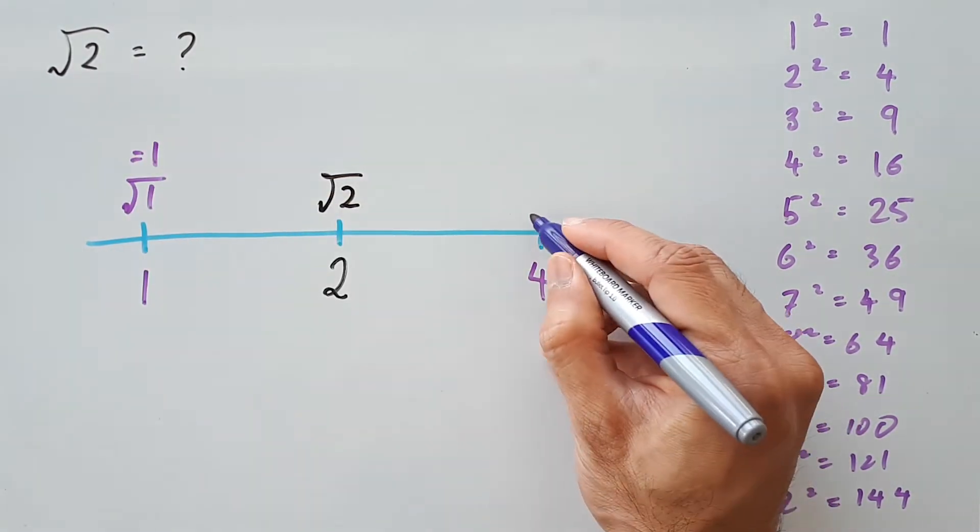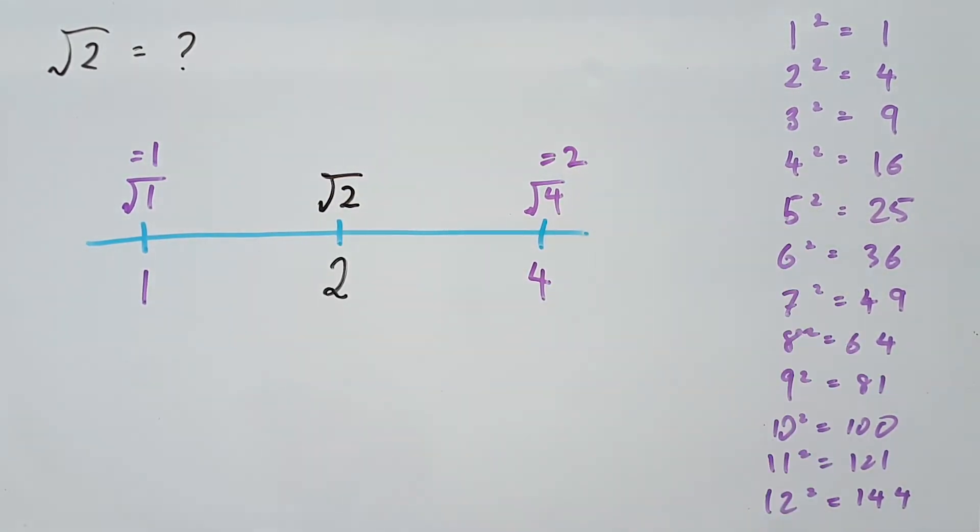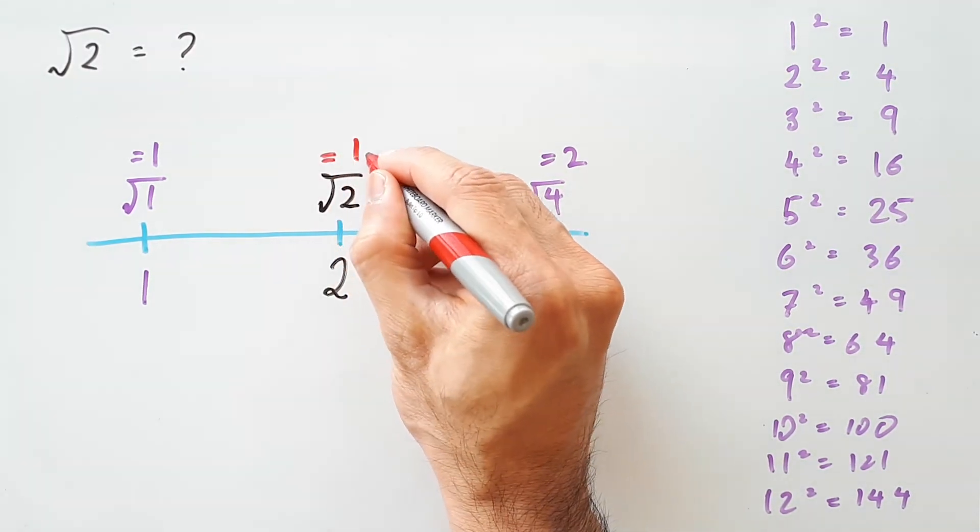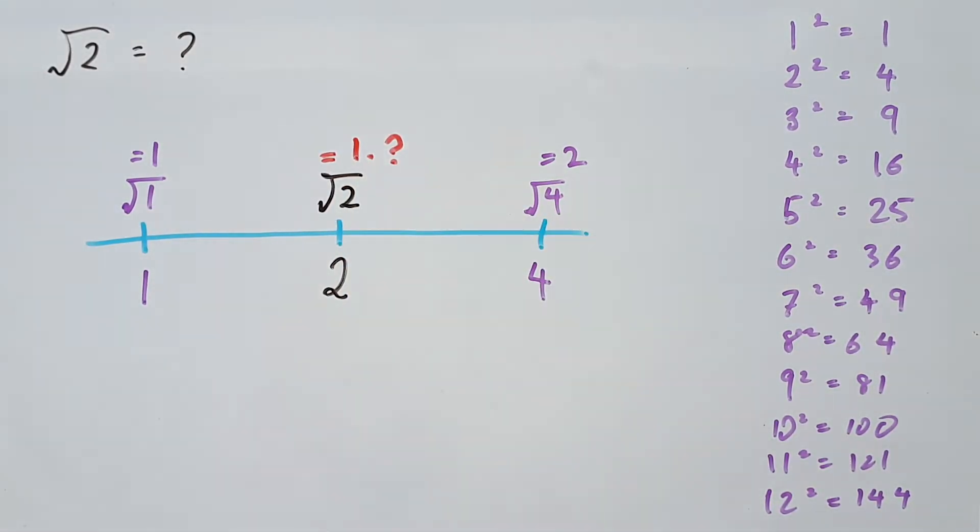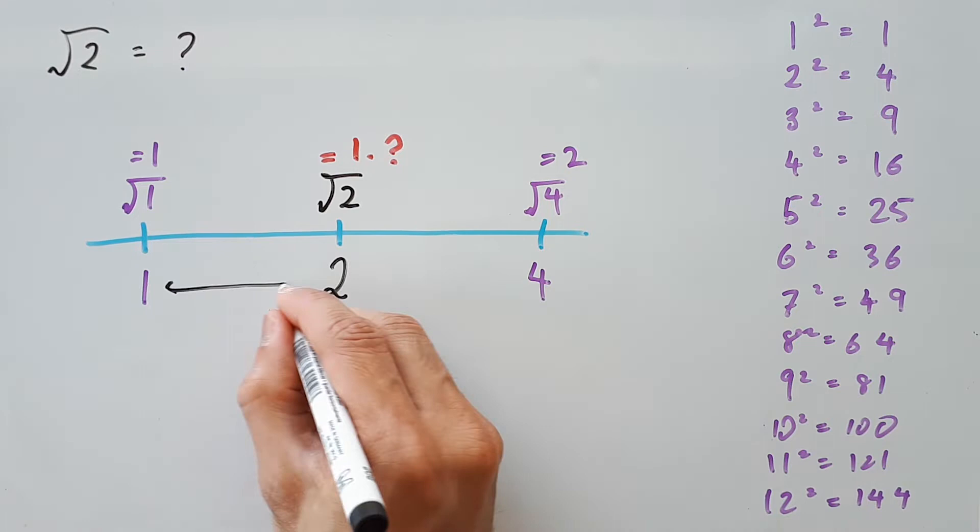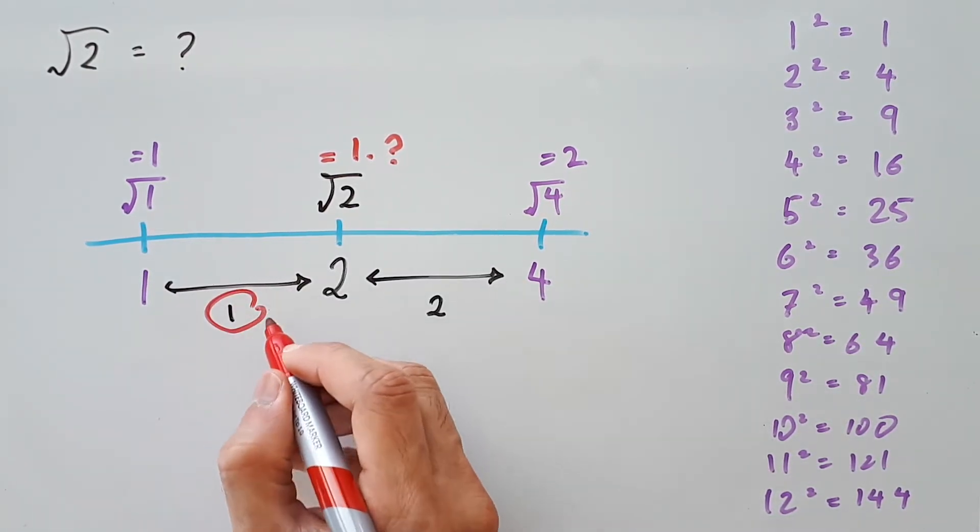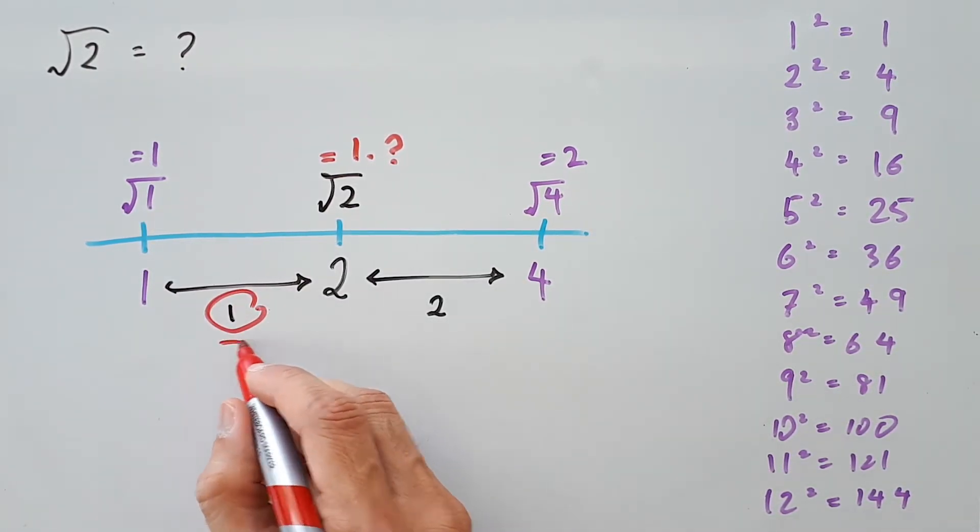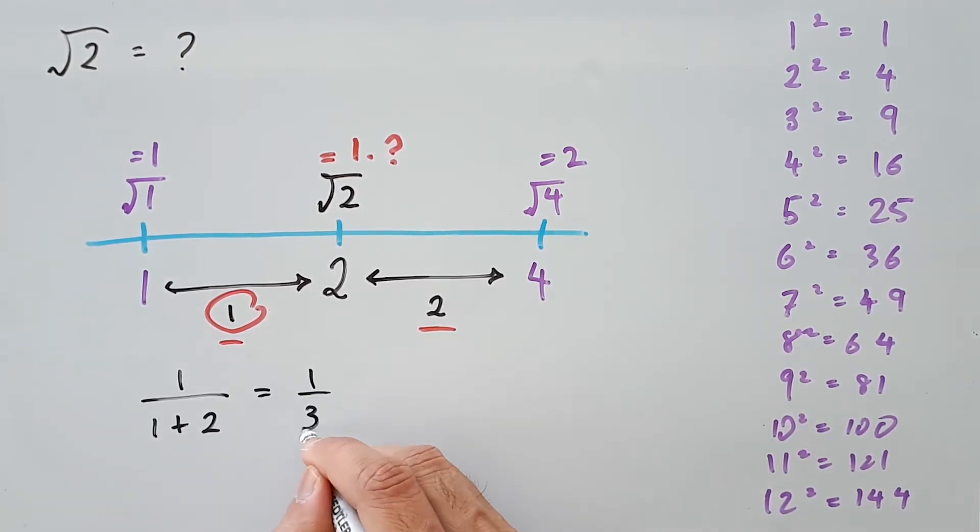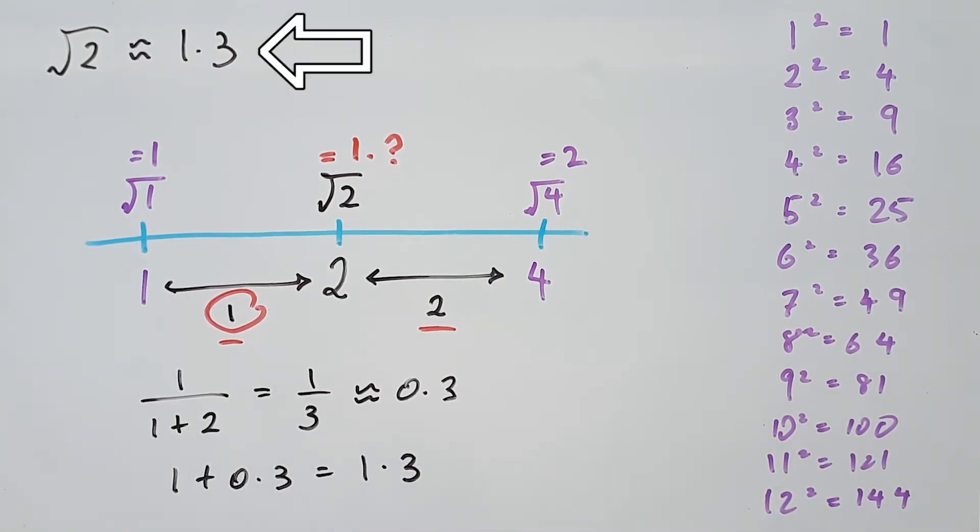Since square root 1 equals 1 and square root 4 equals 2, this must mean that square root 2 is between the values 1 and 2. So square root 2 will equal 1 point something. To find out that something, take the differences between your perfect squares, then take the first number and divide by the sum total of both of these numbers. Doing the math gives us an estimate value of 0.3, and this is how far the value is above the lower boundary of 1. So 1 plus 0.3 is 1.3, and that is our approximate value of square root 2.